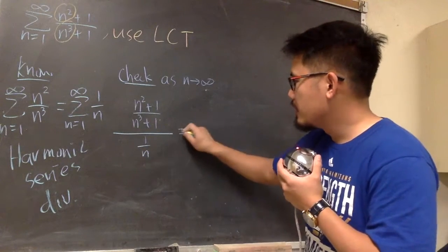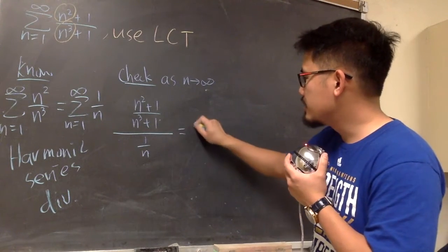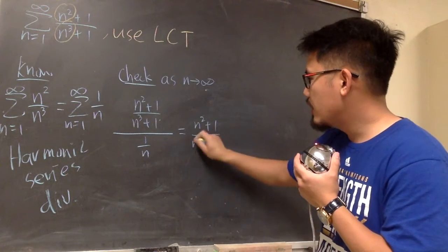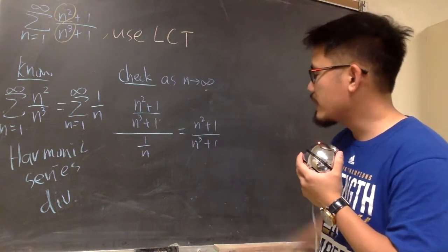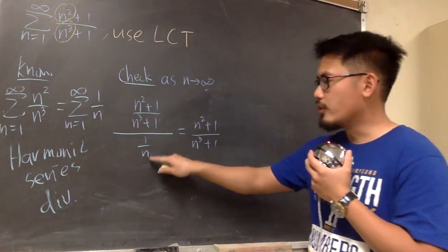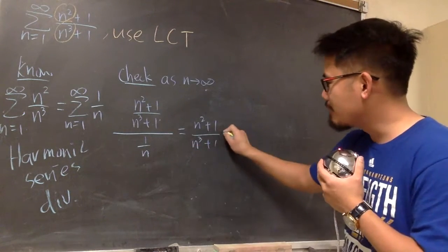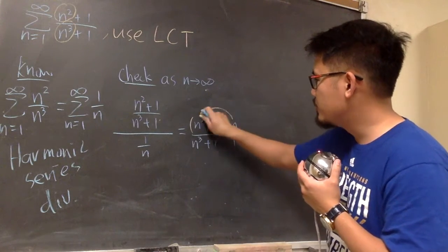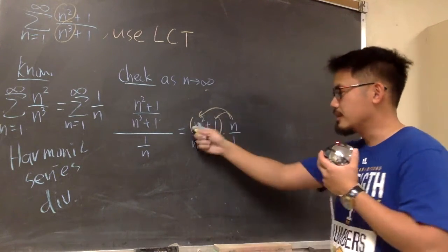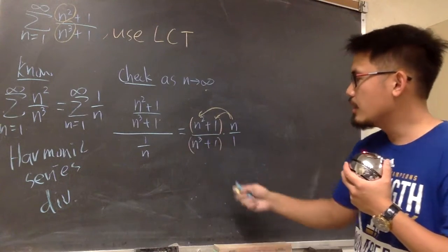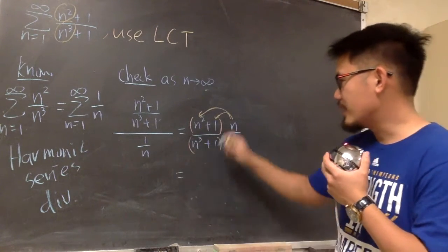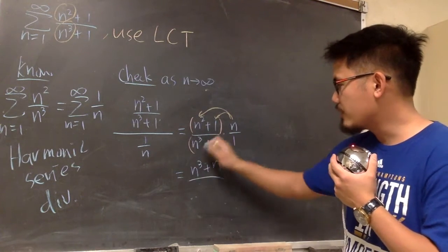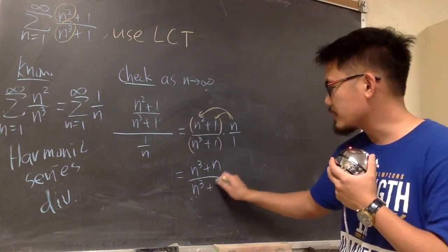So this is going to be — we can do some algebra first. This is the top: n squared plus 1, over n to the third power plus 1, divided by 1 over n, which is the same as multiplying by n over 1. We can distribute this n into the parentheses, and we get n to the third power plus n over n to the third power plus 1.